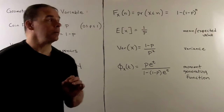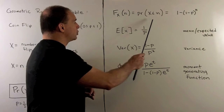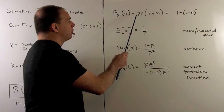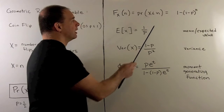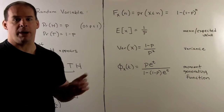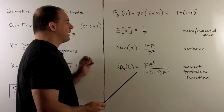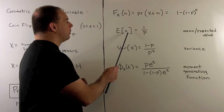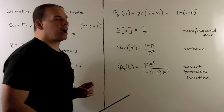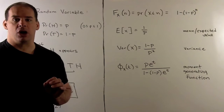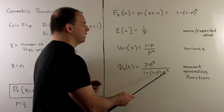Now the facts we want to consider here. First, the cumulative probability distribution — that's just P(X ≤ N) — is equal to 1 minus (1 minus P) to the Nth power. For the mean or expected value of X, we have 1 over P. For its variance, we have (1 minus P) over P squared. For the moment generating function, we have P e^t over (1 minus (1 minus P) times e^t).